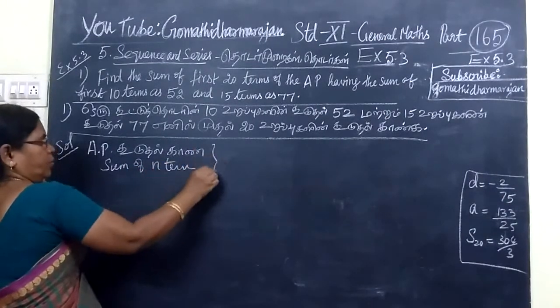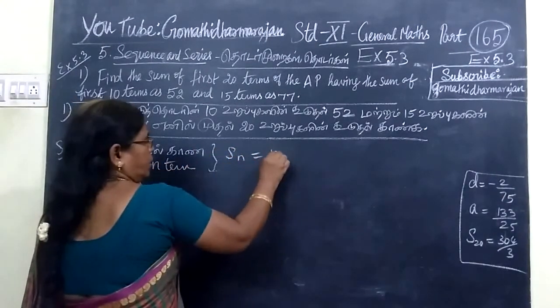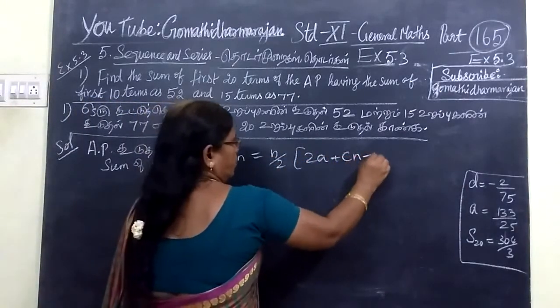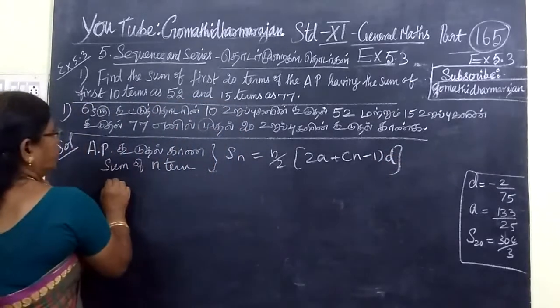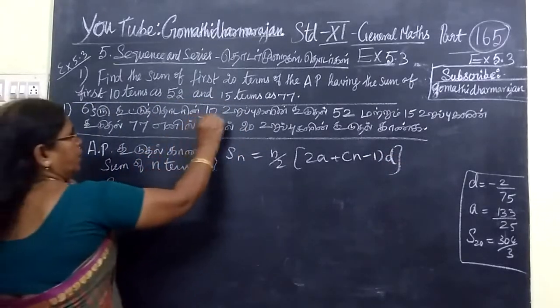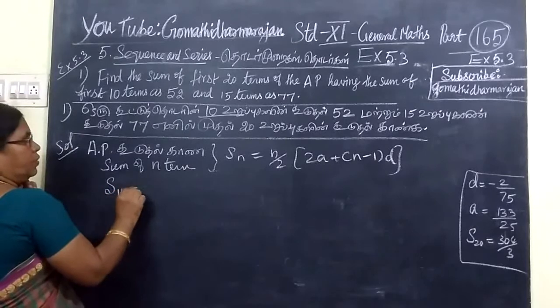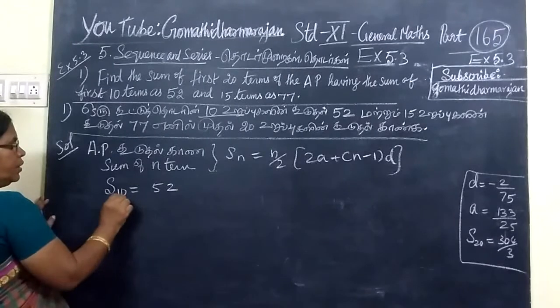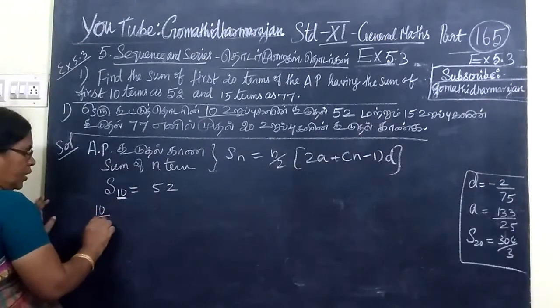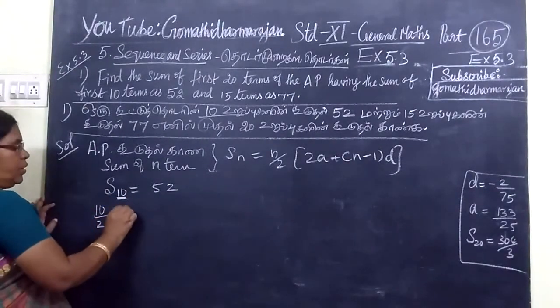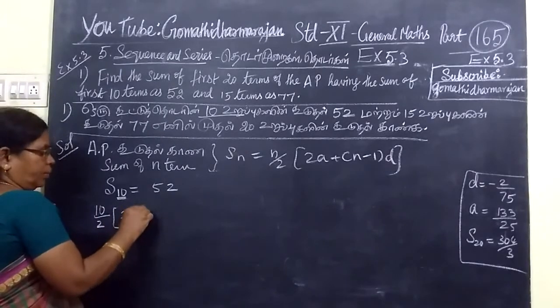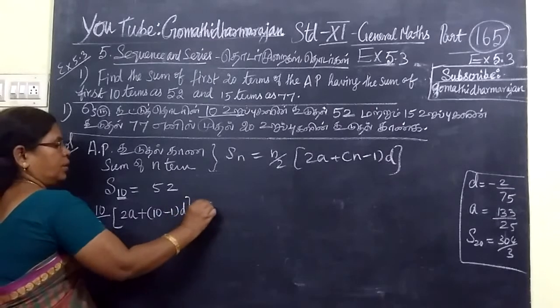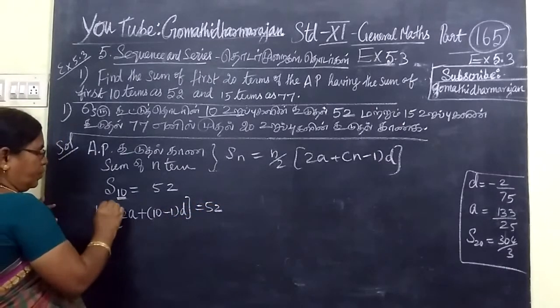Now, formula is Sn equal to N by 2, 2A plus N minus 1 into D. So, N equal to 10, so 10 by 2, 2A plus N minus 1 into D equal to 52.